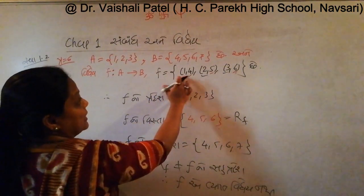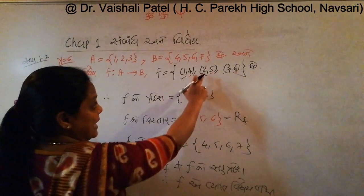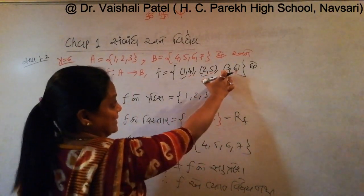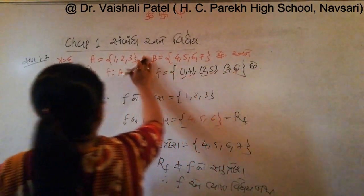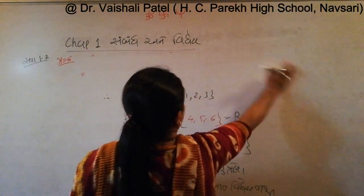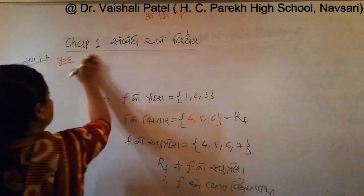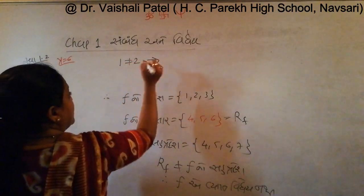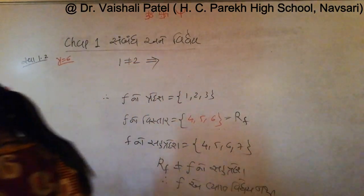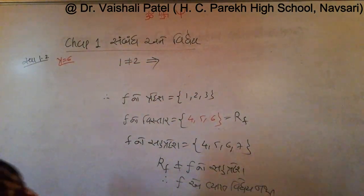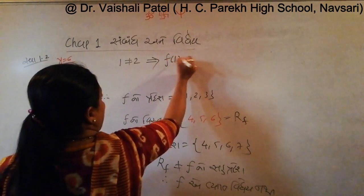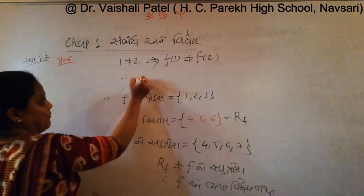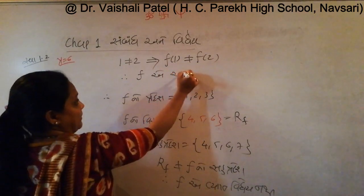f of 1 equals 4, f of 2 equals 5, f of 3 equals 6. Since 1 is not equal to 2, which implies f of 1 is not equal to f of 2, the function is injective.